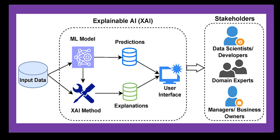Such efforts can help users better understand the reasoning process underlying AI decisions, verify that they conform to common sense or domain expertise, and identify opportunities for improving the quality and reliability of future models. Ultimately, Explainable AI may pave the way towards more reliable, accurate, and trustworthy AI systems that empower rather than replace human cognition and judgment.